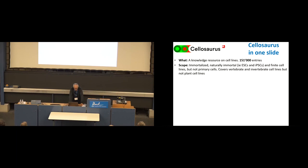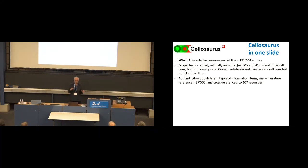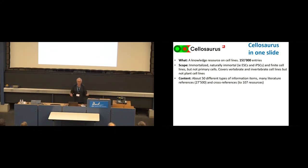The scope covers all immortalized, naturally mortal, or finite cell lines that are well characterized, but not primary cells. It covers all vertebrate and invertebrate cell lines - now about 50 different species. I won't bore you with all 50 different fields of information, but basically there are 50 different types of information items, a lot of references to show where data comes from, and cross-references to a huge number of external resources that either use, provide information on, or very importantly distribute cell lines.